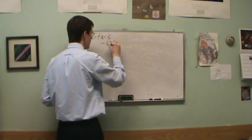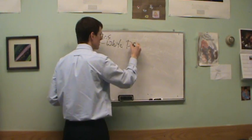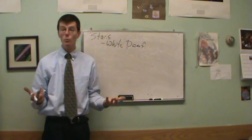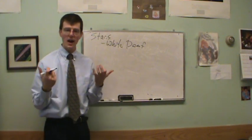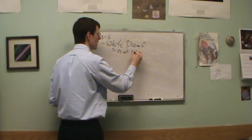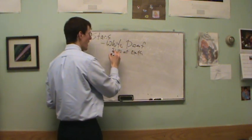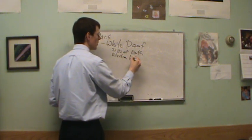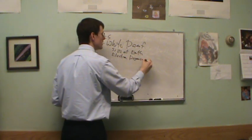...a white dwarf star. This is an interesting object - it's what our Sun will become. It is the size of the Earth, held up by electron degeneracy pressure.